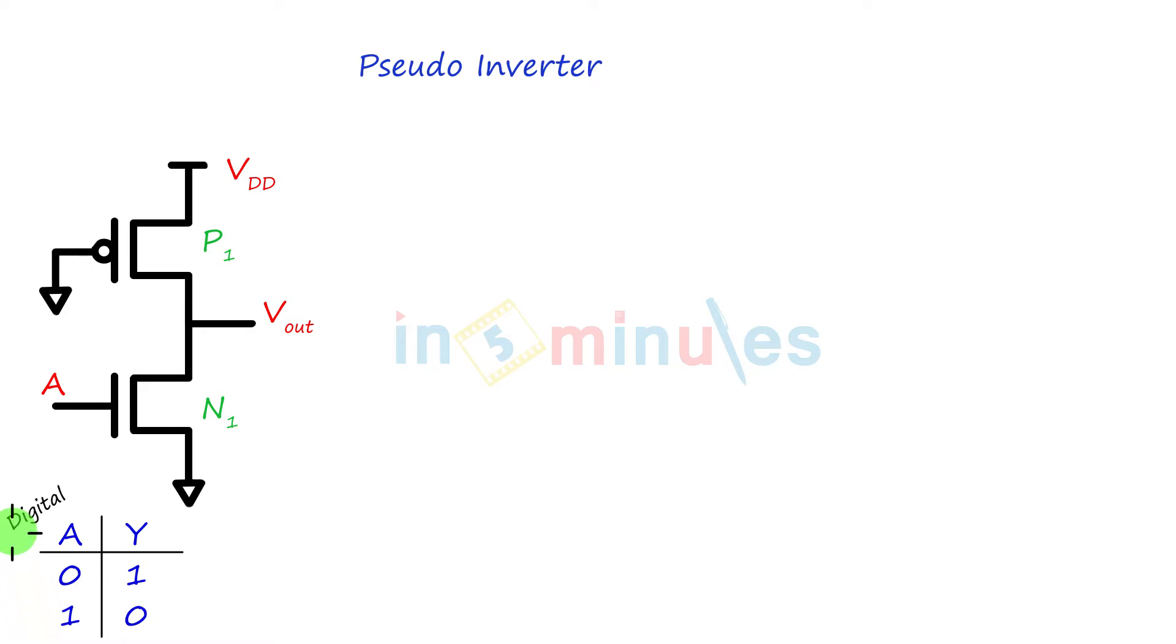This is in digital values. If you have to talk in terms of analog values, we say that if my VDD is 1.8, 0 to 0.9 will be termed as logic 0 ideally, and greater than 0.9 to 1.8 would be termed as logic 1 ideally.